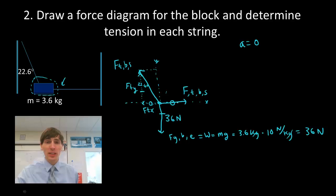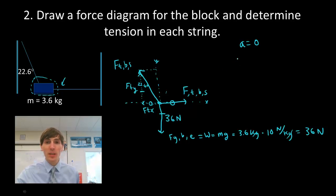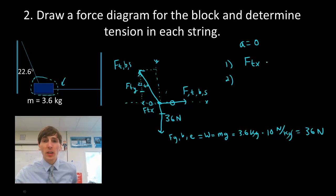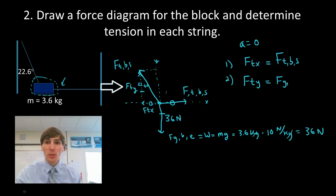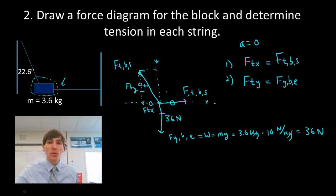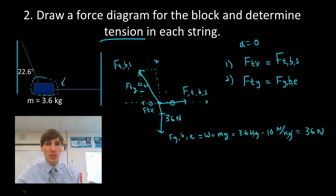Sometimes you may have more than one force acting vertically and you'll have to adjust your equation. Once I've done this, I need to make force vector equations using those equality marks. I can write two equations — one for the x-axis and one for the y-axis. For the x-axis: the x-component of tension (FTX) equals the force of tension on the block by the other string. For the y-axis: FTY equals the force of gravity on the block by the Earth. I'll use these equations along with trig to solve for the unknown tensions.